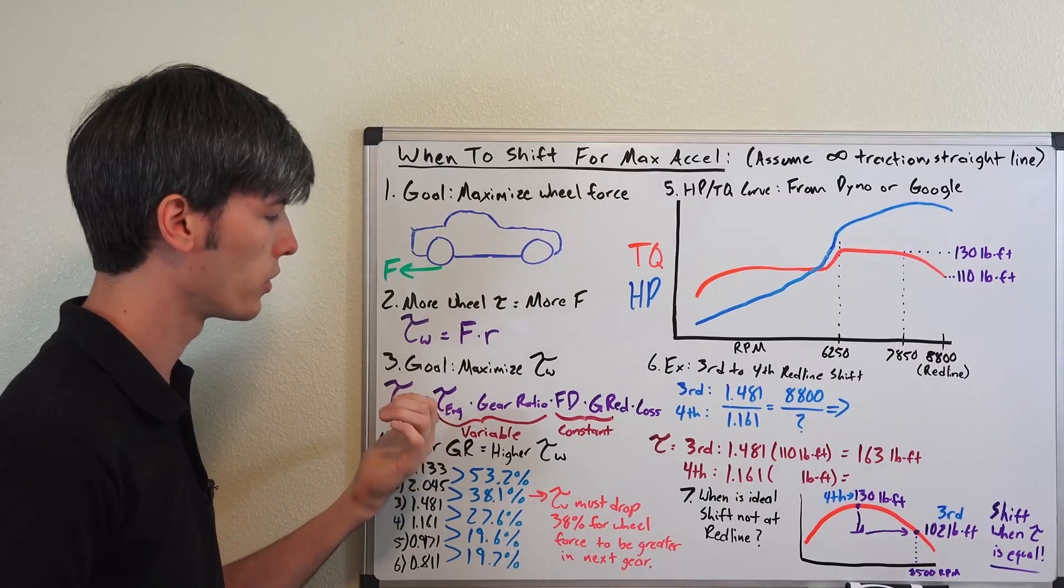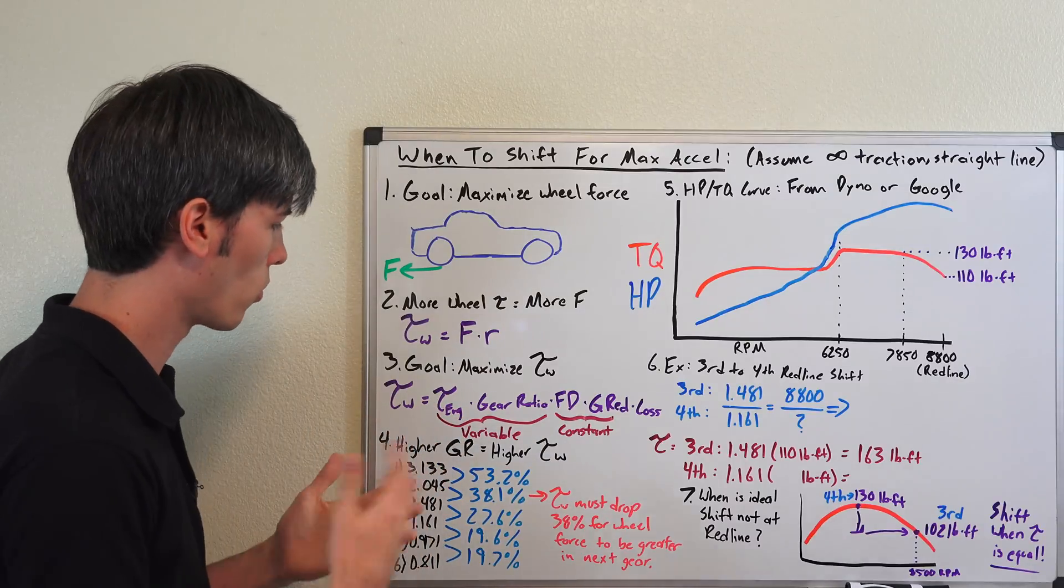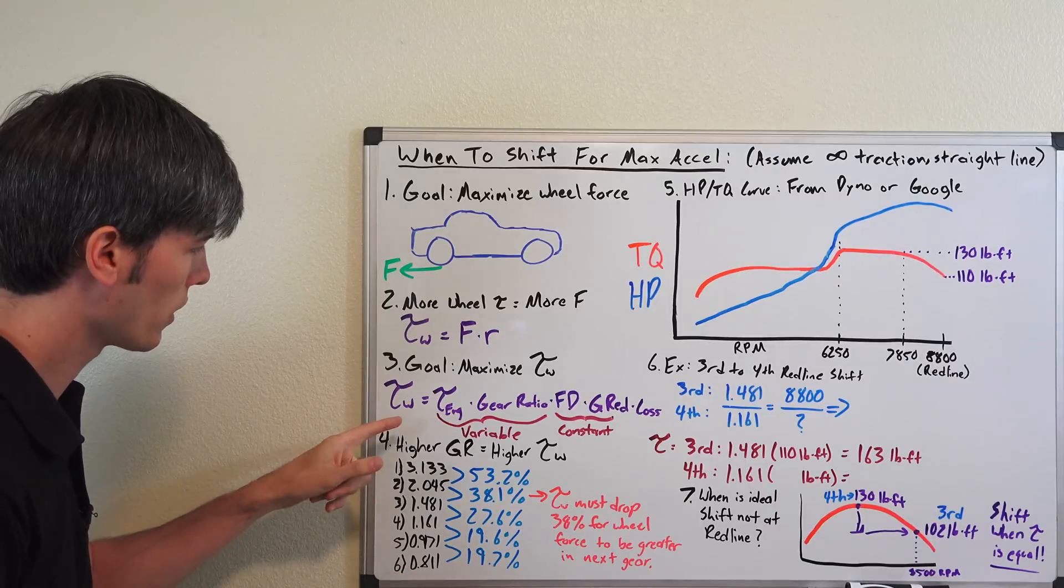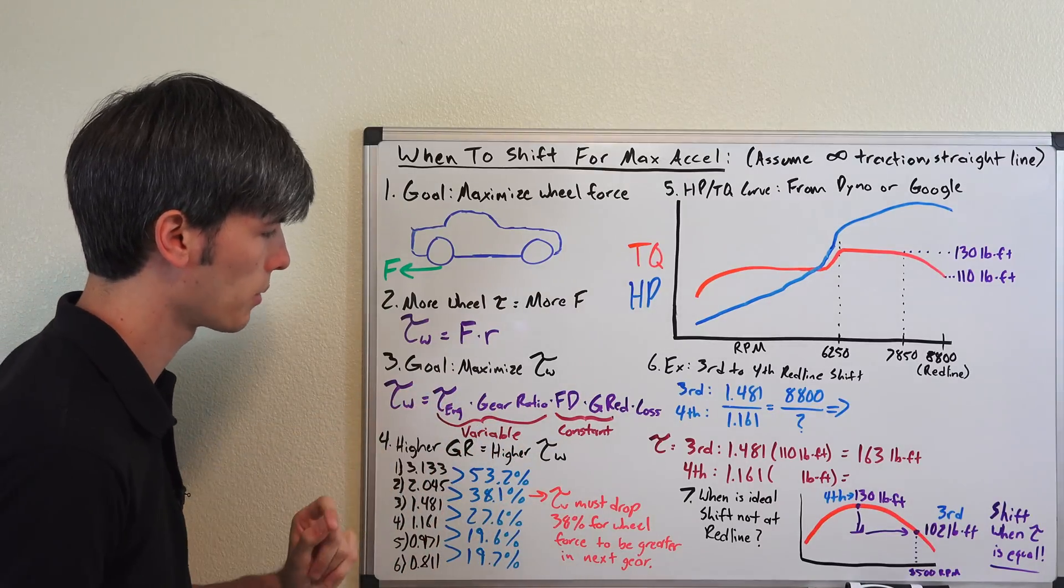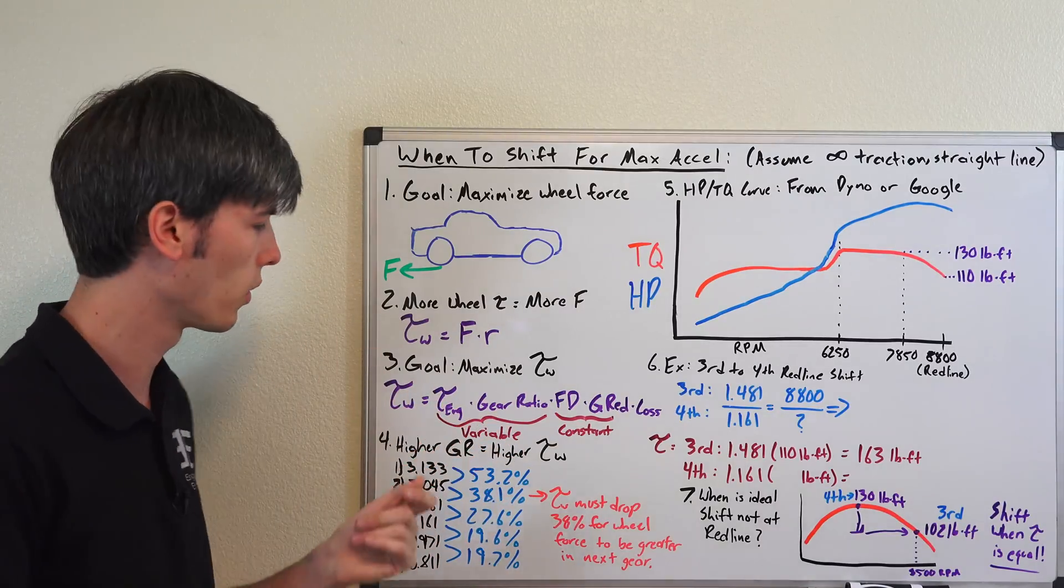So we're going to assume maximum engine torque with the throttle wide open. So we want to maximize this number right here multiplied together. Engine torque times gear ratio, we want that as big as possible, always.